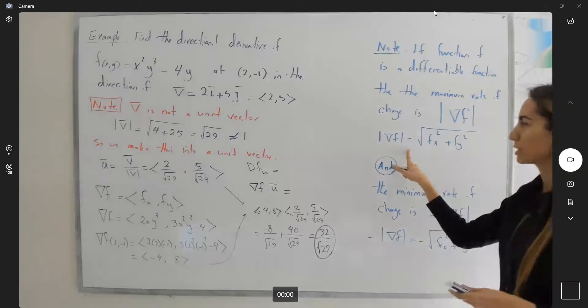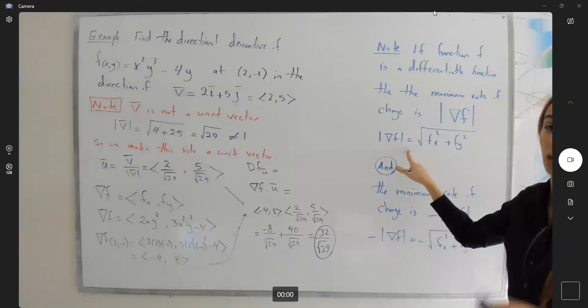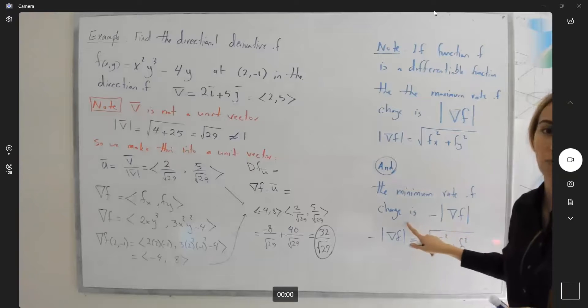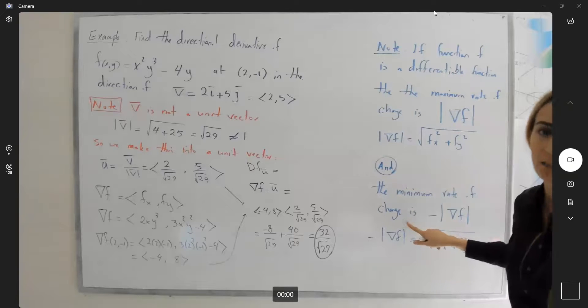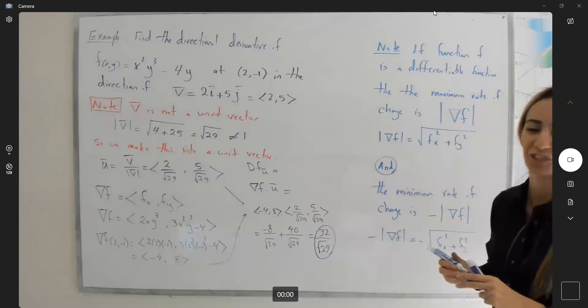The maximum rate of change happens in the same direction as your unit vector, and the minimum rate of change happens in the opposite direction of your unit vector.